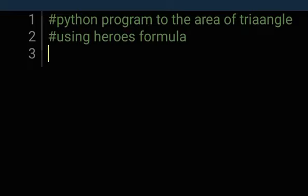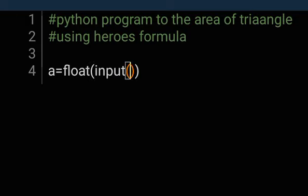We are going to write a program to find the area of a triangle using Heron's formula, which means the three sides will be known. Side A will be represented by variable A. Let's convert the input to float, then input and enter side A.